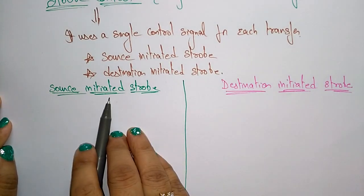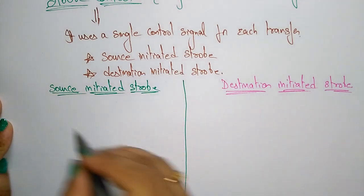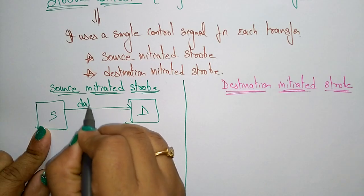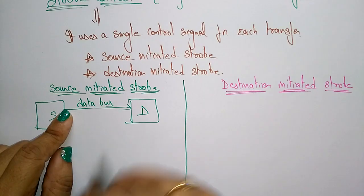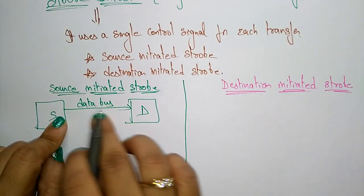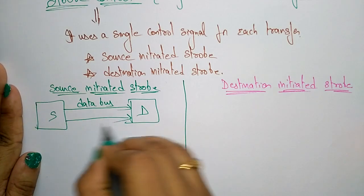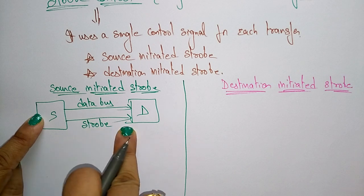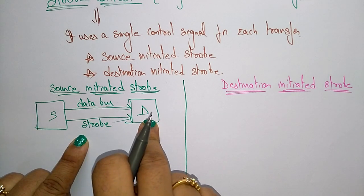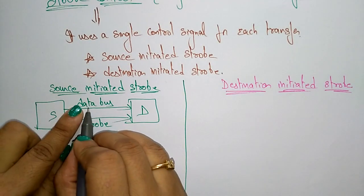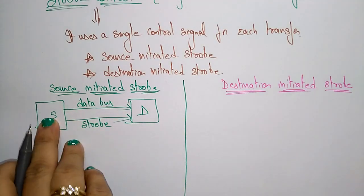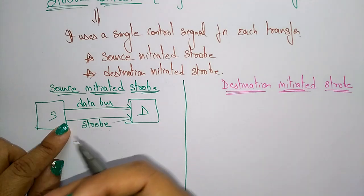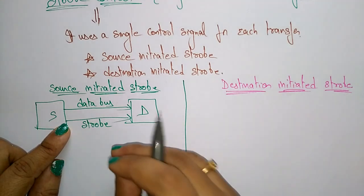In source-initiated strobe, the data bus carries binary information — zeros and ones — from source to destination, along with the strobe signal. The source initiates the strobe. The strobe informs the destination when a valid data word is available on the bus. Only valid data will be sent from source to destination. The strobe signal is saying that valid data is present on the data bus.